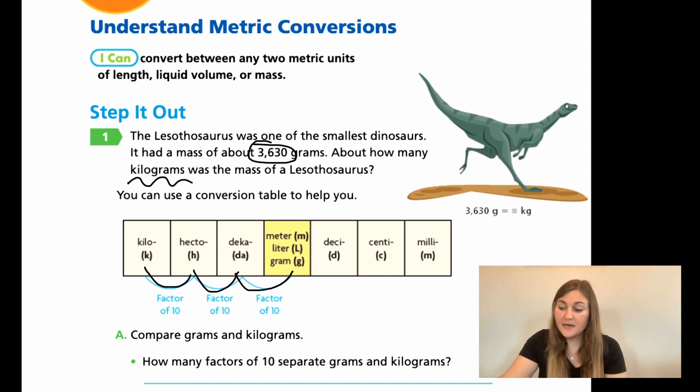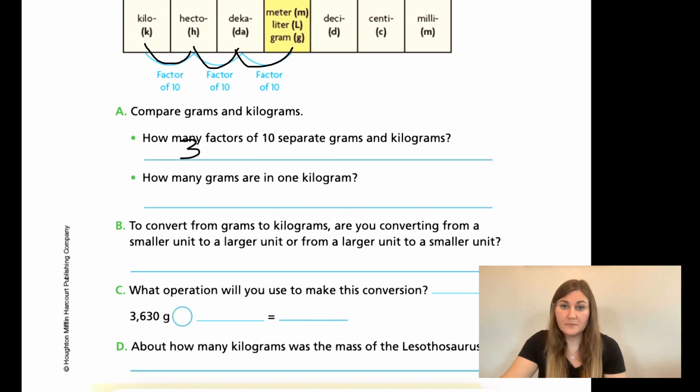So for A, it says compare grams to kilograms. It says how many factors of 10 separate the grams and the kilograms. So every time we jump to the next value or look at it almost like a place value, that would be one factor. So we made three jumps, which means we are three factors away from in grams to kilograms. It says how many grams are in one kilogram. So we know that if we did three factors of 10 each time we move, we're multiplying by 10. So if we multiplied by 10, then 100, then 1,000, three zeros, three jumps. So we would say that there are 1,000 grams to be equal to one kilogram.